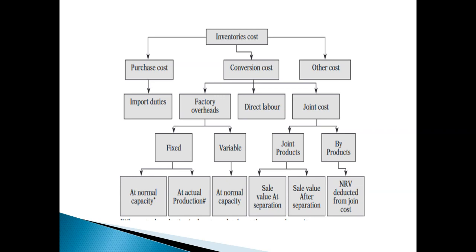Normal capacity is the production expected to be achieved on average over a number of periods under normal circumstances, taking into account planned maintenance. The standard says if actual production approximates normal capacity, actual can be used. The amount of fixed production overhead allocated per unit should not be increased as a consequence of low production or idle plant. In periods of abnormally high production, fixed overhead per unit is decreased so inventories are not measured above cost.